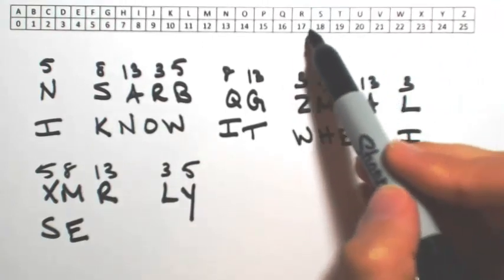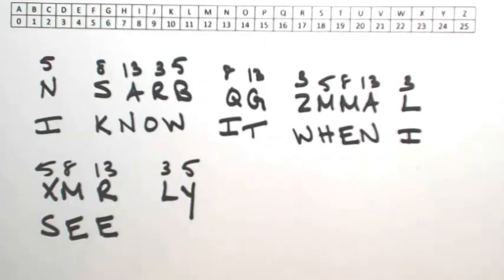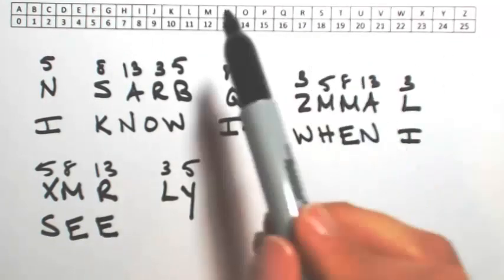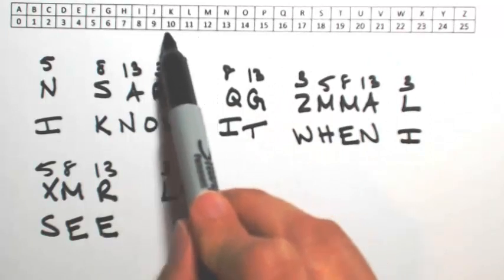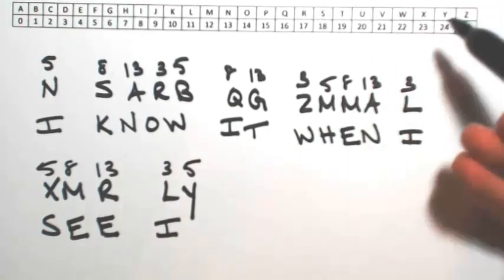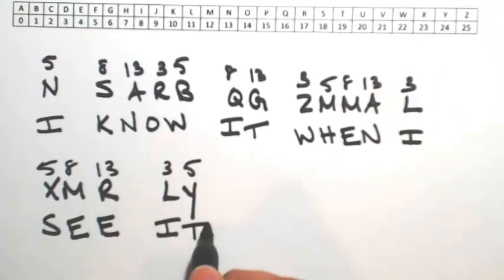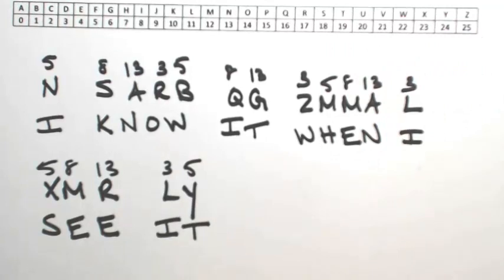R was shifted by 13, so 17 minus 13 is 4, giving me an E again. Okay, last one there, L was shifted by 3, so 11 minus 3 is 8, giving me an I. And then Y was shifted by 5, so 24 minus 5 is 19, giving me a T. So here's our message: I know it when I see it.